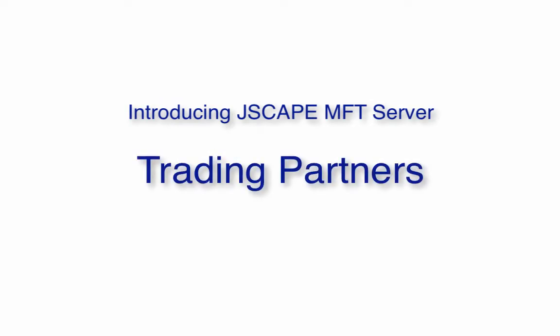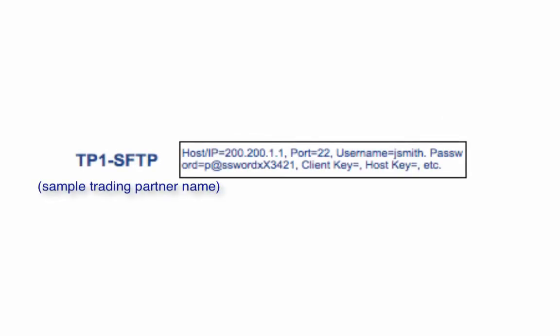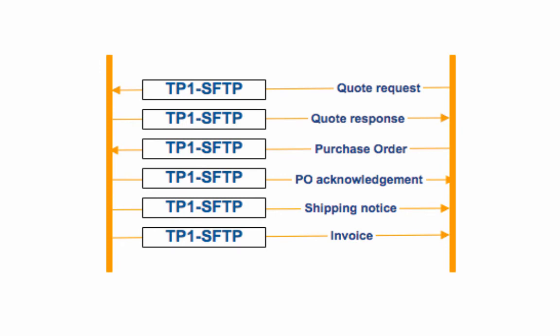Here's a better way. Let me introduce you to the JScape MFT server solution. In JScape MFT server, you can define an entity that's also called a trading partner. A single trading partner can consist of all the necessary attributes for connecting to a trading partner's file transfer service. For instance, a trading partner for an SFTP service would consist of a host name or IP address, port number, username, password, client key, host key, and so on. The advantage is that every time you set up an automated file transfer requiring the credentials and connection settings already assigned to a trading partner, you simply call that trading partner into play.